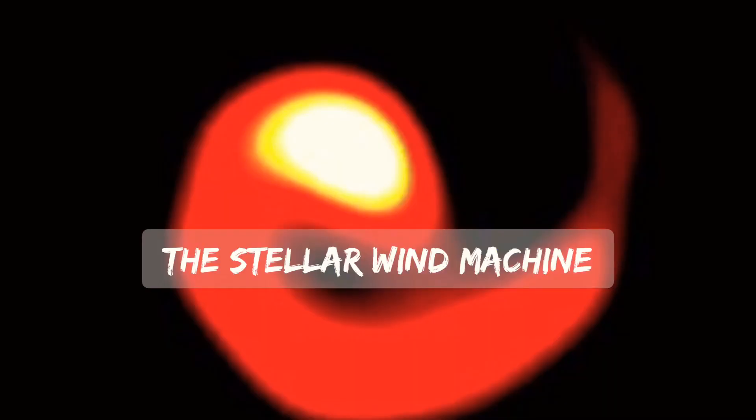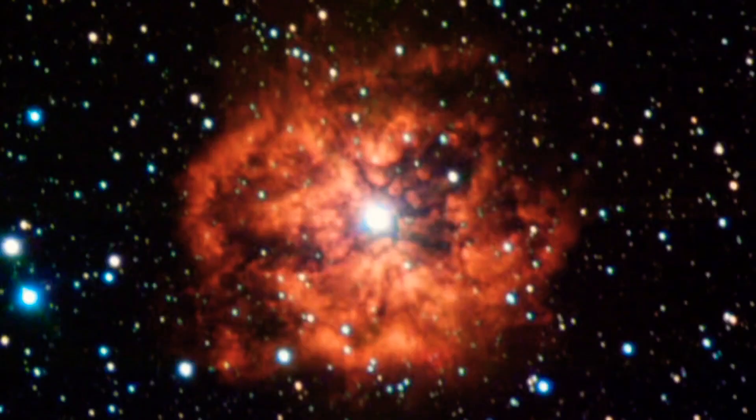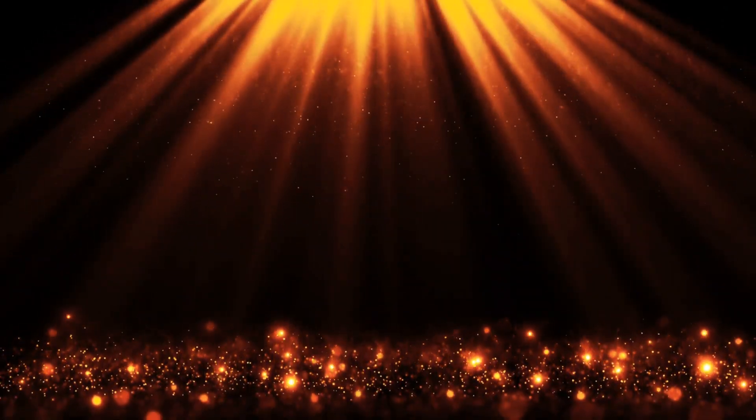Giant stellar wind machine. WR-104 is a Wolf-Rayet star at the precarious point in its life before it goes supernova. The core has no helium left to burn. Instead, WR-104 is forced to churn through heavier elements such as oxygen, which upsets the careful balance between gravity and fusion inside it, causing the star to shed its outer layers.